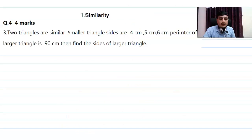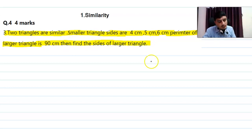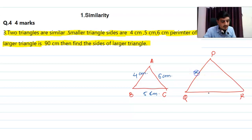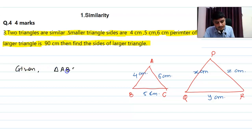Question 4.3: Two triangles are similar. The smaller triangle has sides 4 cm, 5 cm, and 6 cm. The perimeter of the larger triangle is 90 cm. Find the sides of the larger triangle. Let triangle ABC be the smaller triangle with AB = 4 cm, BC = 5 cm, AC = 6 cm, and triangle PQR be the larger triangle with PQ = x, QR = y, PR = z.